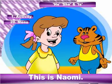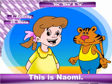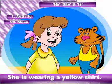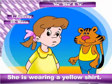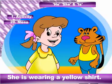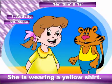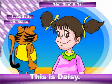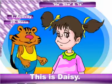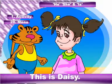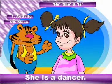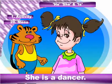This is Naomi. She is wearing a yellow shirt. This is Daisy. She is a dancer.